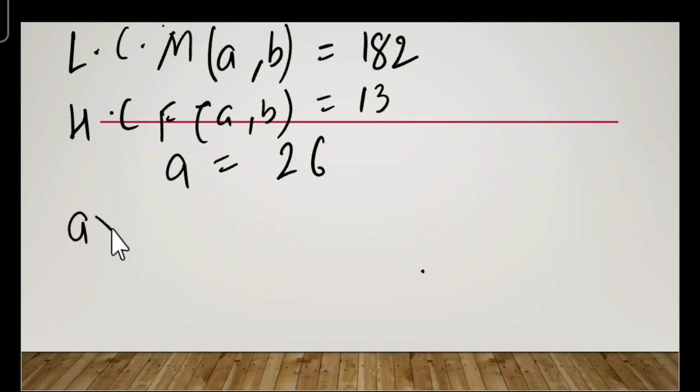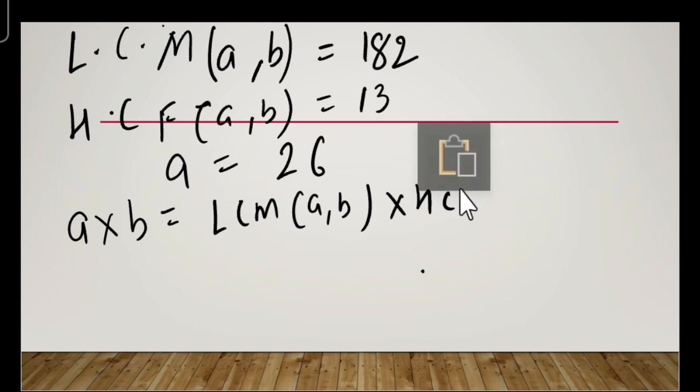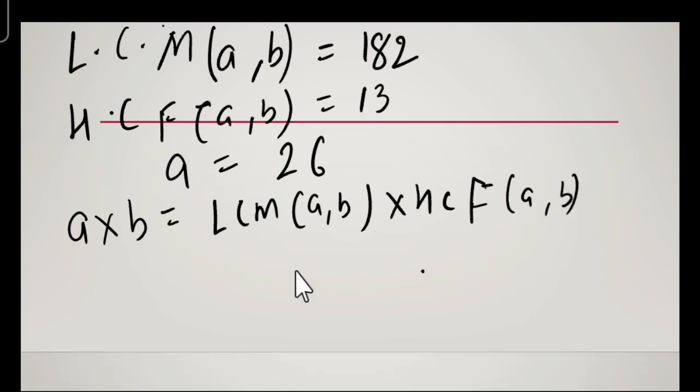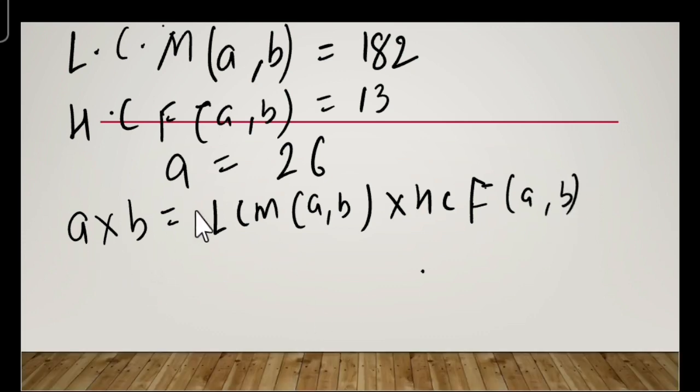According to the formula, we know that the product of two numbers is equal to the product of their LCM and HCF. So a × b = LCM(a,b) × HCF(a,b). We have the value of a, the LCM, and the HCF, and we need to find the second number.